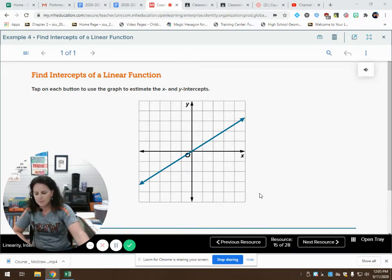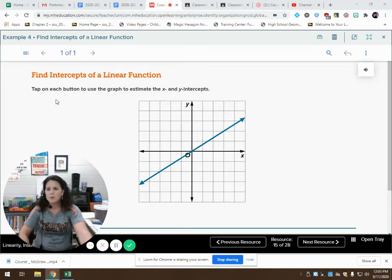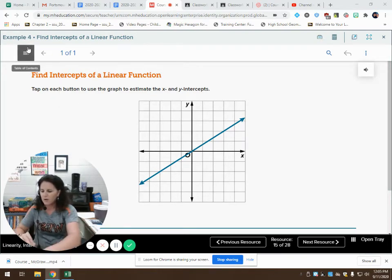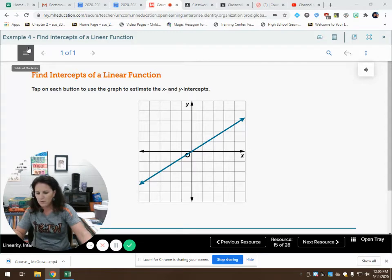We're going to jump back into linearity, intercepts, and symmetry, part two. We're going to begin with example four from your student workbook on page 15.